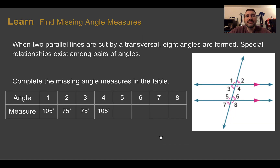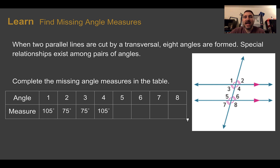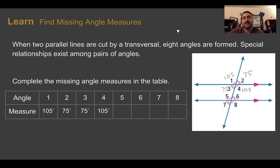Let's learn — find missing angle measures. When two parallel lines are cut by a transversal, eight angles are formed and special relationships exist among pairs of angles. Complete the missing angle measures in the table. Taking the given values and writing them on the picture: angle one is 105, angle two is 75, angle three is 75, and angle four is 105. By filling in the picture, I can use those angle relationships to fill in the missing values.